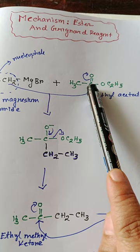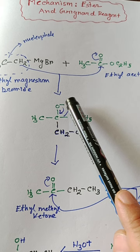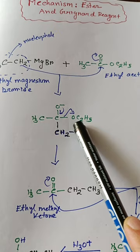Then we are getting this intermediate. Now O is negatively charged so it moves towards the carbon and OC2H5 is leaving as a leaving group. We are getting ethyl methyl ketone.